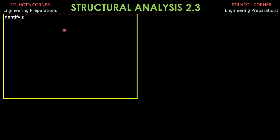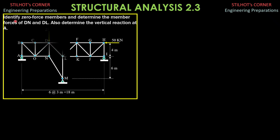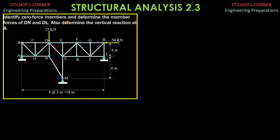Hello, future engineers and subscribers. There is another problem on truss. And I hope that you will learn from the explanations here and from the solution you charge it from experience. And if you want to anticipate the solution to this problem, then you may do so by pausing the video. Identify zero force members and determine the member forces of DN, which is this, and DL. Also, determine the vertical reaction at A.